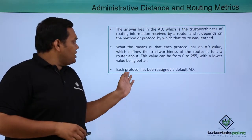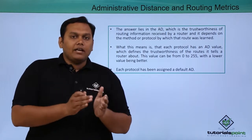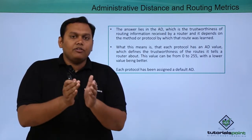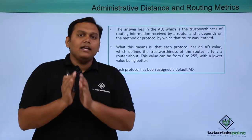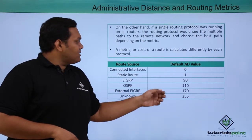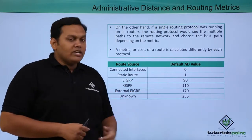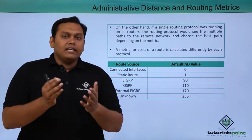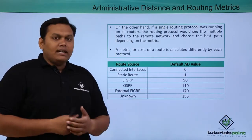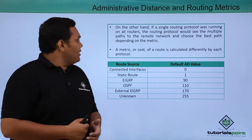Each protocol has been assigned a default AD value. Protocols like EIGRP, OSPF, and exterior gateway protocols all have separate AD values. Connected interfaces have an AD value of 0, static routes have an AD value of 1, EIGRP has 90, OSPF has 110, and so on — with unknown routes having an AD value of 255.